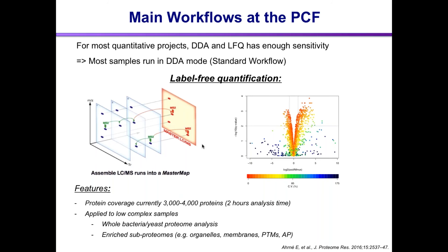We also developed a tool called SafeQuant that can validate hits and perform statistical analysis to find differences in proteins. The coverage is about 3,000 to 4,000 proteins, possibly a bit higher with new instruments in a two-hour gradient. We apply it to almost everything — bacteria, yeast analysis. If there aren't too many samples, or if you're looking at subproteomes, it's a very nice method.